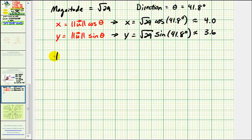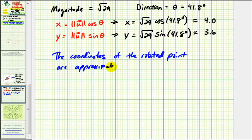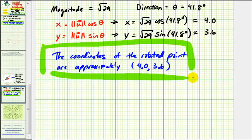So the coordinates of the rotated point are approximately (4.0, 3.6). I hope you found this explanation helpful.